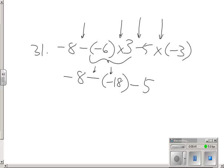Take away 5 times negative 3. I'll keep that as one step. I'll just do that separately.